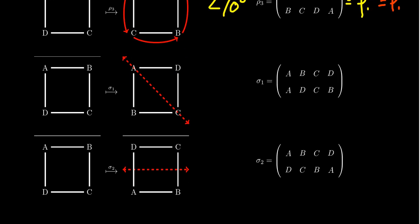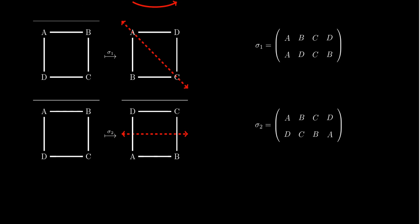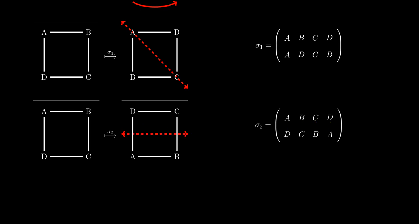The square also has four reflective symmetries. If we take the diagonal line from A to C — the northwest to southeast corner — and reflect across that diagonal, points A and C stay fixed since they're on the line, but B and D swap locations. This is sigma 1. Another reflective symmetry uses the horizontal axis: reflecting across the x-axis causes A and D to swap locations and C and B to swap, giving us sigma 2.